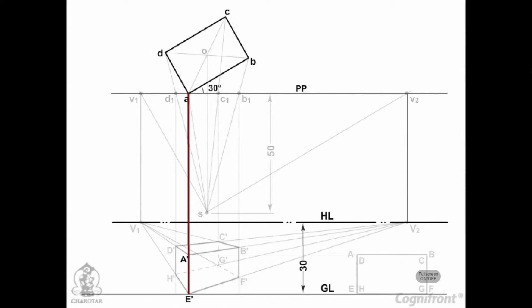Therefore, through A, draw a vertical line to a point E' on GL, and on it mark A' so that A'E' equals AE. This length may be measured directly or may be projected from the front view as shown.